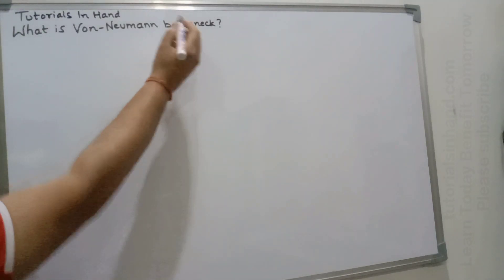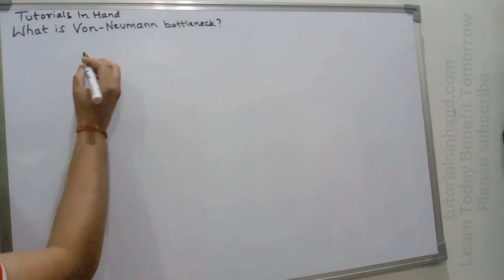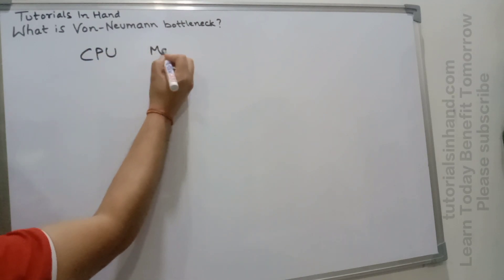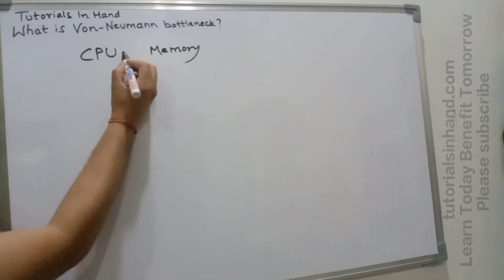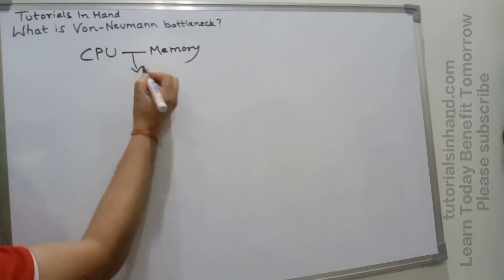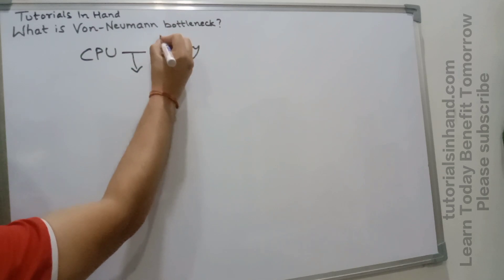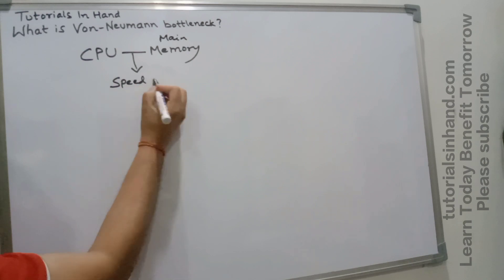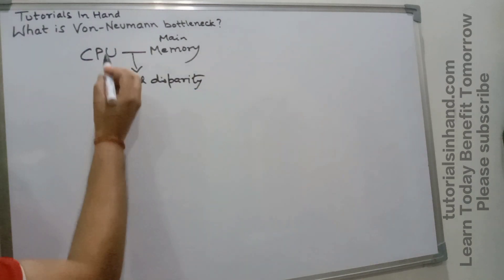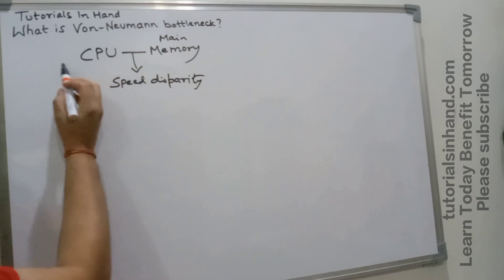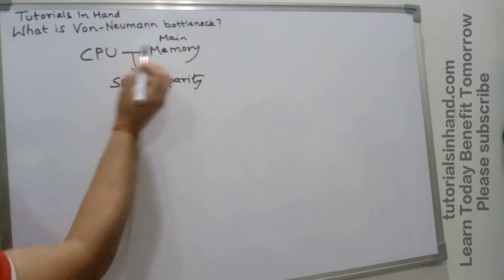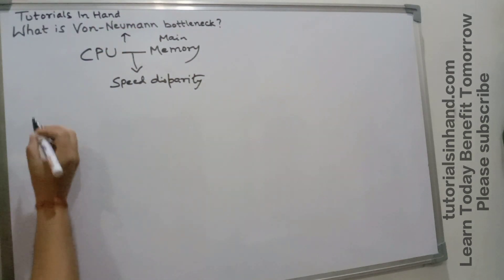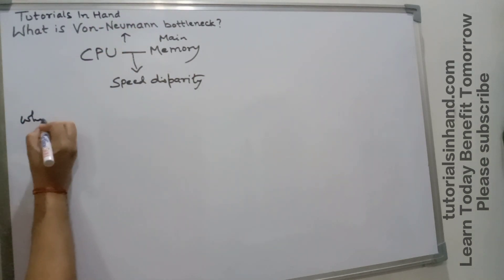Let's understand what the Von Neumann bottleneck is. The Von Neumann bottleneck is the speed disparity between CPU and main memory. In simple terms, the disparity in speed between the CPU and main memory is referred to as the Von Neumann bottleneck.